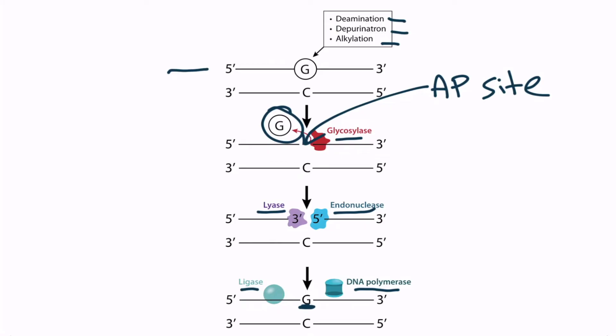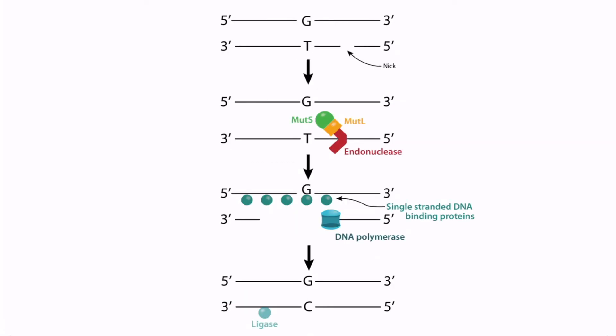In eukaryotic cells, DNA is replicated and proofread by DNA polymerases. However, when this mechanism fails, the mismatch repair system acts as a backup. Guanine normally pairs with cytosine, but in this figure, guanine is incorrectly paired with thymine — the bases are mismatched and the T must be replaced with a C, hence the name mismatch repair.